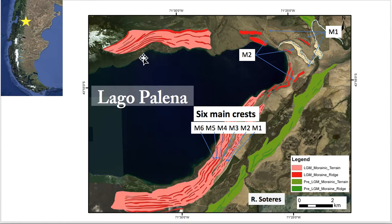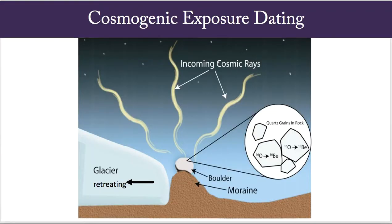We know that the glacier was big during multiple events, but weren't able to say when those events were. In the past few decades, a new method has developed that allows us to date these moraines, called cosmogenic exposure dating.